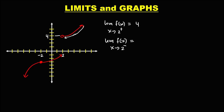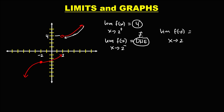For the left side limit, since there is no left side limit for positive 2, this limit does not exist. Therefore the overall limit of f(x) as x approaches positive 2 does not exist.